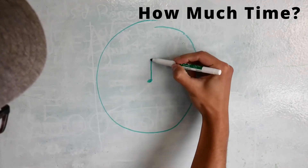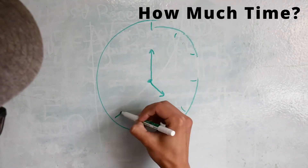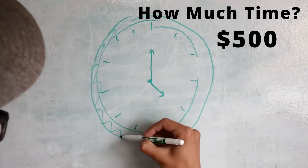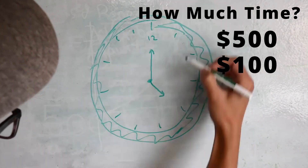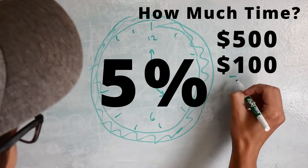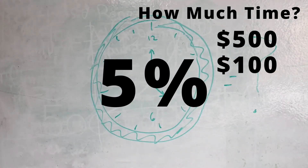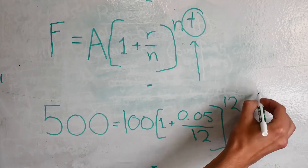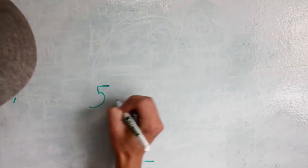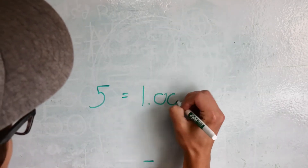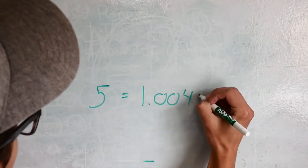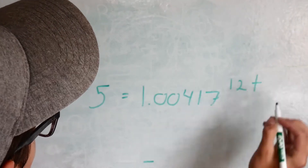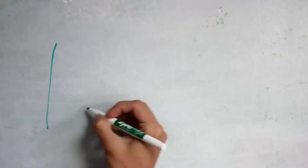This allows me to answer my compound interest question: how much time will it take me to get $500 from my original $100 compounded monthly at 5%? If we input all of this information into the compound interest equation and simplify it, we have 5 equals 1.00417 to the power of 12t. Here's where logarithms come in.